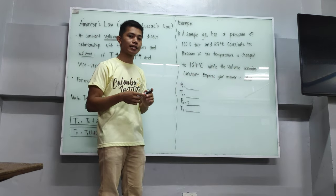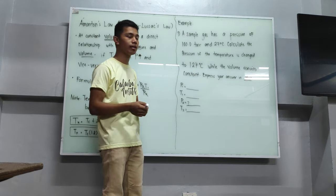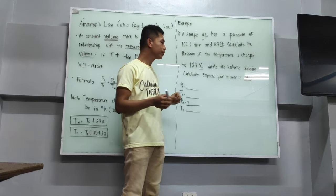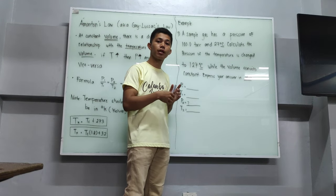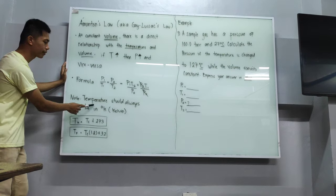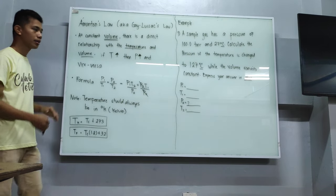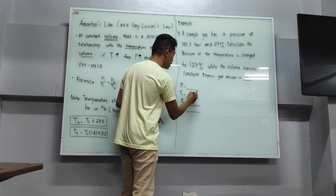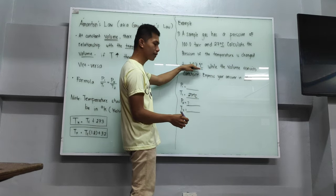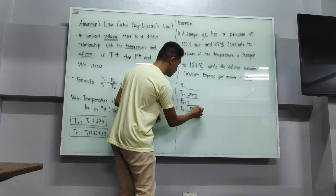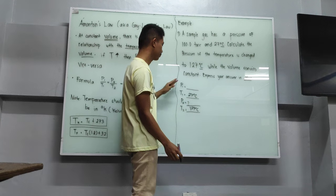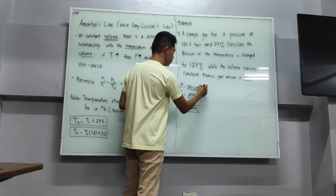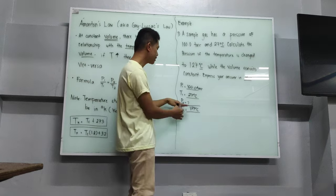First, let us analyze the question. Our given values are in degrees Celsius. For our initial temperature T1, we have 27 degrees Celsius. For our final temperature, we have 127 degrees Celsius. For pressure, we have 100 torr for our initial pressure. What is missing is the final pressure P2.